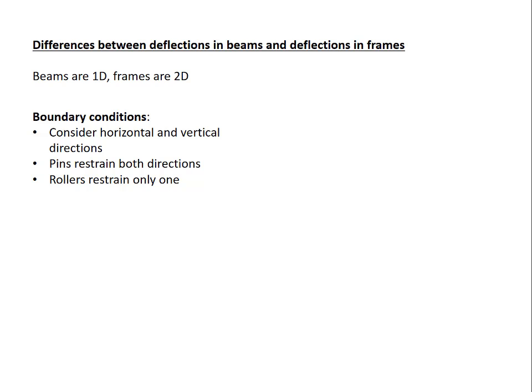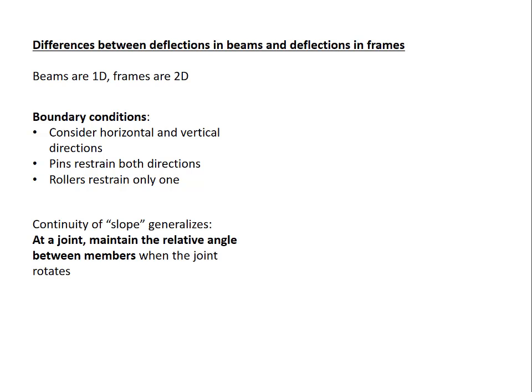We need to generalize the concept of continuity of slope. What it means in frames is that at a joint, you must maintain the relative angle between members when the joint rotates. Looking at the diagram here, if I have the joint on the left-hand side that's originally at a right angle, and then the structure moves, and that movement causes a rotation of the joint,